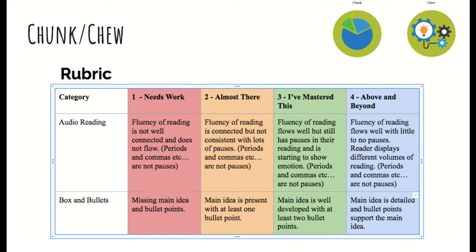Lastly, a number four: fluency of reading flows well with little to no pauses. The reader displays different volumes of reading — 'Man, that was great' versus 'Man, that was great.' So there should be fluency when you're reading. There should be no pauses like 'and the kangaroo... the... what?' It should be smooth, it should flow, and you should have different volumes of reading.